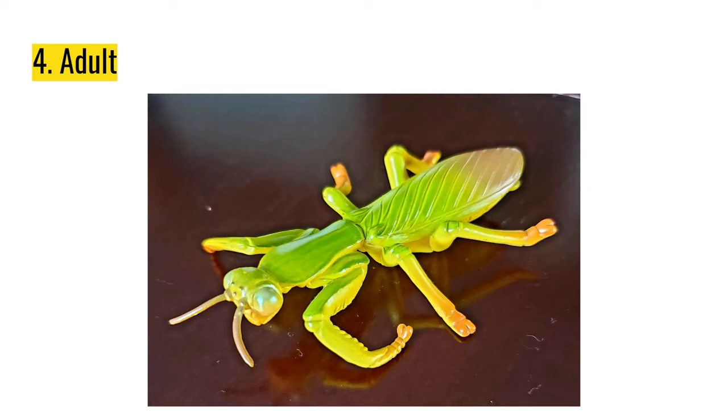The praying mantis will eat insects, small birds, mice, lizards, and frogs. It will mate and then continue the life cycle by laying more eggs.